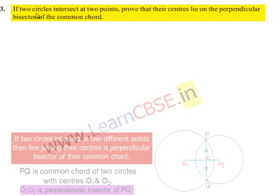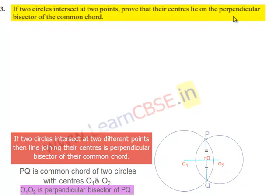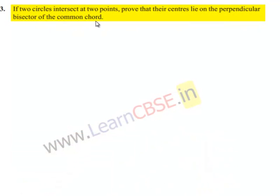Moving on to the third question: if two circles intersect at two points, prove that their centers lie on the perpendicular bisector of the common chord.